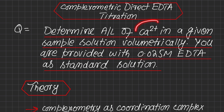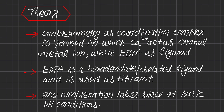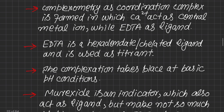We will take the EDTA titrant in the burette, whereas calcium ions will be taken in the flask. The theory of this titration is that it is a complexometric titration in which a coordination complex is formed between the analyte and EDTA. Our analyte is the calcium ion, which acts as the central metal atom, whereas EDTA acts as the ligand.